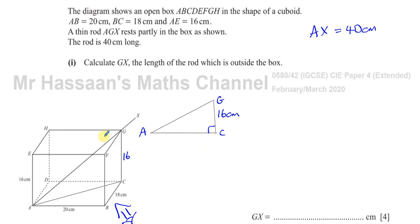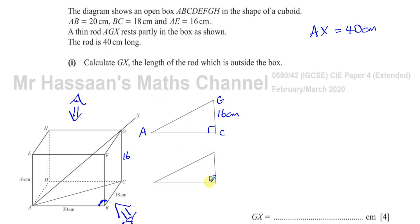However, if we look at the base from above, it forms another right angle triangle — because the base is a rectangle. Looking straight down, we get right angle triangle ABC, where the right angle is at B. We know AB is 20 centimeters and BC is 18 centimeters, so from this we can find AC. This AC is the same as the AC in the triangle ACG.